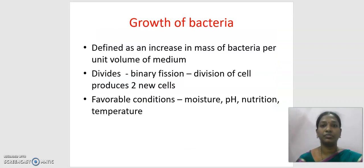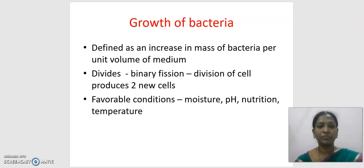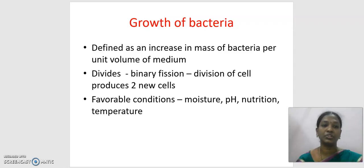Next, we'll see about the growth of bacteria, defined as an increase in the mass of bacteria per unit volume of the medium. Growth takes place by binary fission — simply, one cell produces two new cells, and two new cells produce four new cells. Some favorable conditions required for proper bacterial growth are moisture, pH, nutrition, and temperature. We'll see the remaining part in the next class.